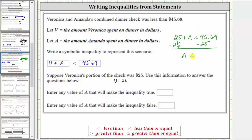We bring down the inequality symbol, and then we have 45.69 minus 25. If we want, we can write 25 as 25.00. Subtracting, we get 20.69.